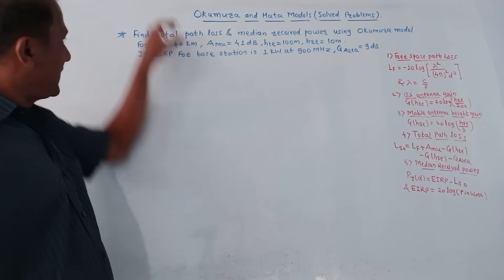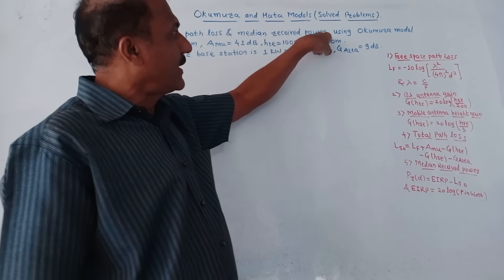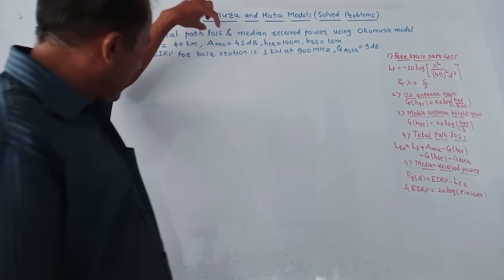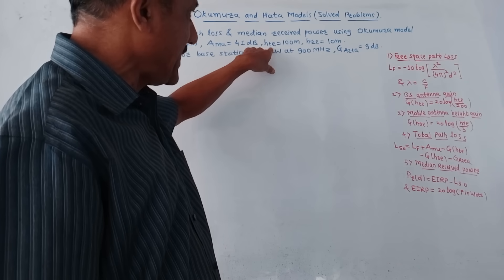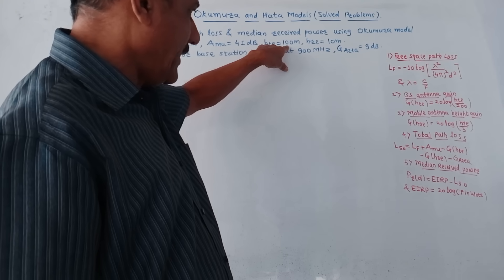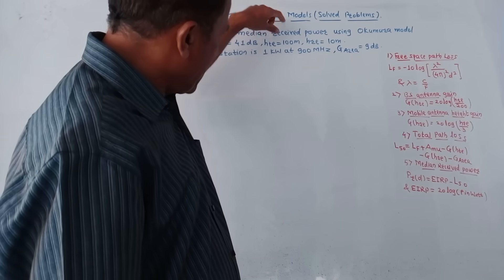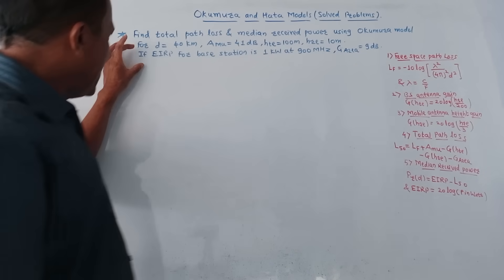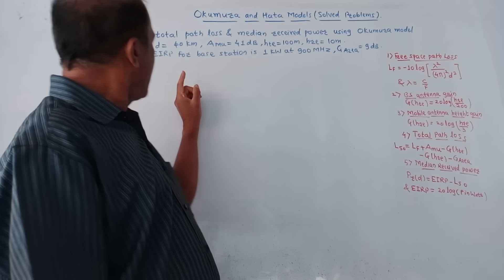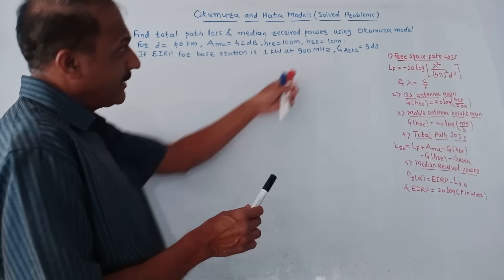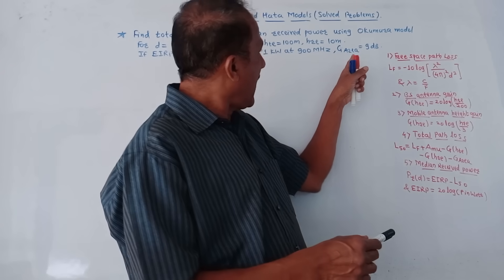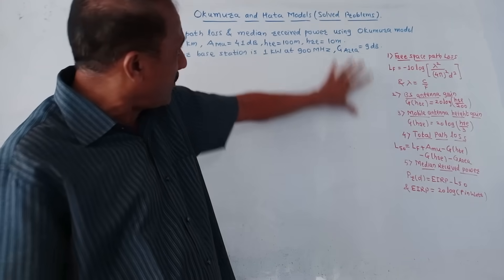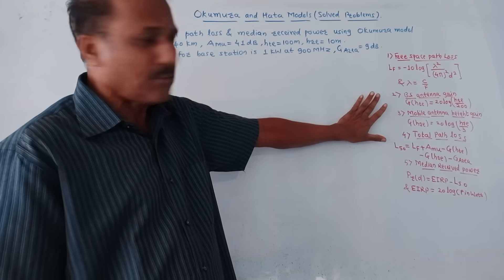Now let us solve the numerical. The given problem is: find the total path loss and median received power using Okumura's model for distance d = 40 km, AMU = 41 dB, HTE (base station antenna height) = 100 m, HRE (mobile antenna height) = 10 m, EIRP = 1 kilowatt at 900 MHz, and G_area (environmental gain) = 9 dB. This formula set is more than sufficient to solve any such numerical.